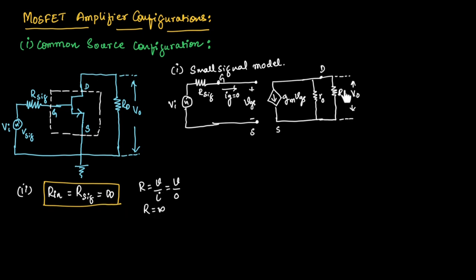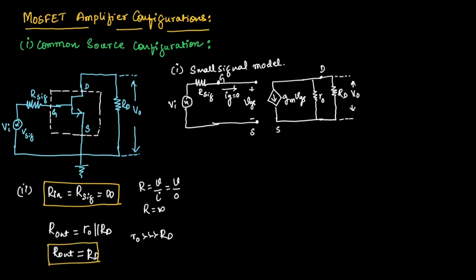Now let us find the output resistance. At the output side, we have two resistors connected in parallel, so output resistance R_out equals R0 parallel with RD. Since R0 is very much greater compared to RD, the output resistance is approximately equal to RD. We can write the parallel combination as R0·RD divided by R0 plus RD; since R0 >> RD, this simplifies to RD.